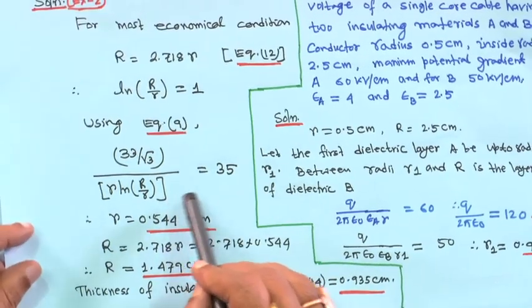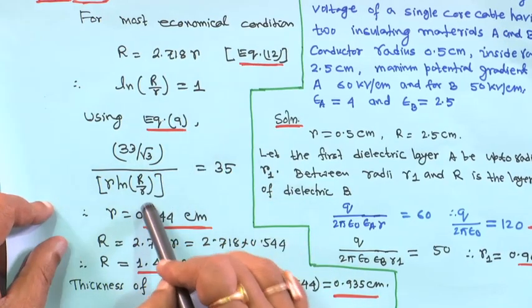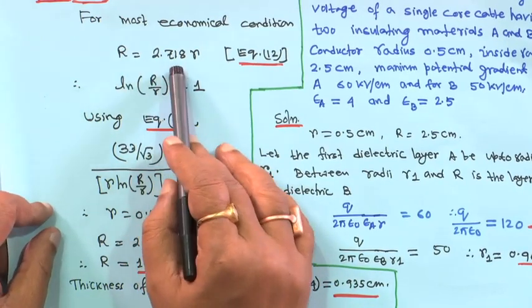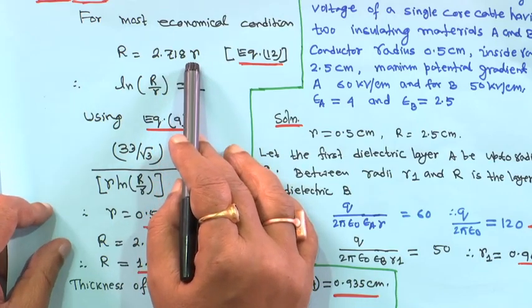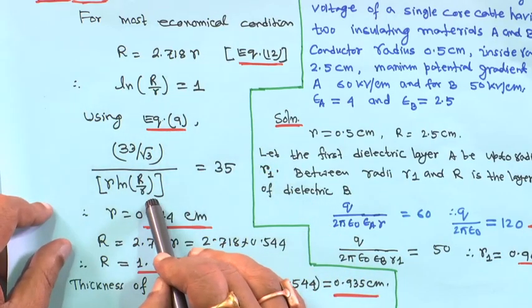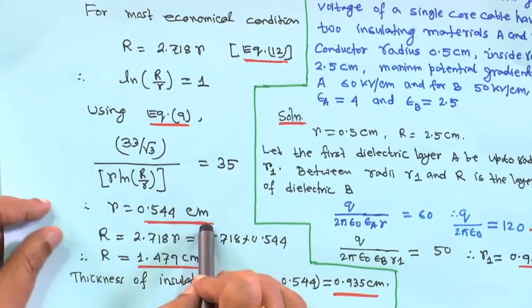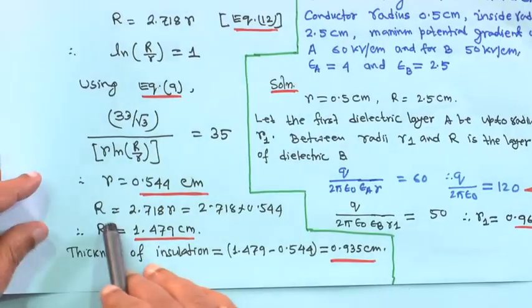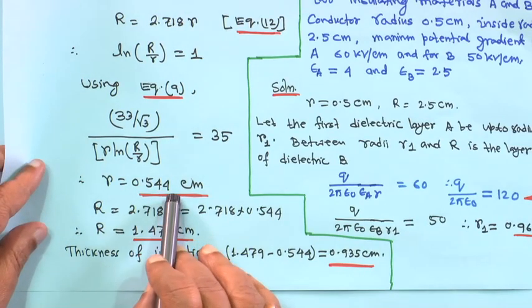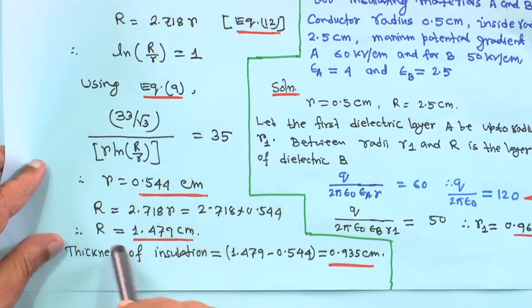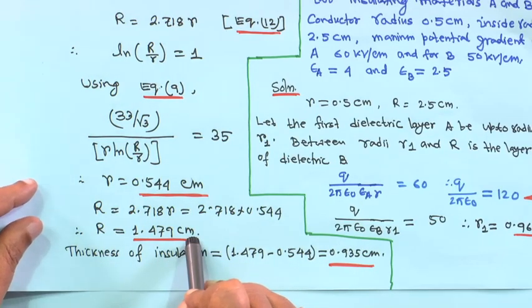Since ln(R/r) equals 1 under the most economical condition (because R = 2.718r = e·r), we can substitute directly. Solving this equation gives small r equal to 0.544 centimeter. Therefore, capital R equals 2.718 times r, which is 2.718 times 0.544.